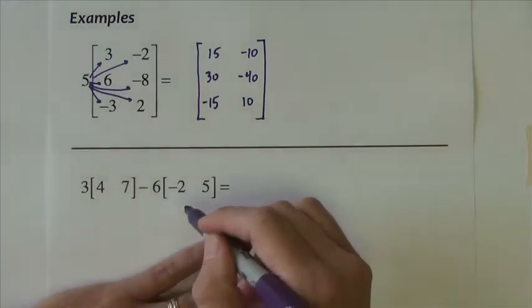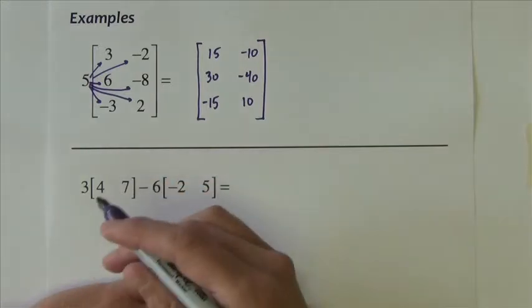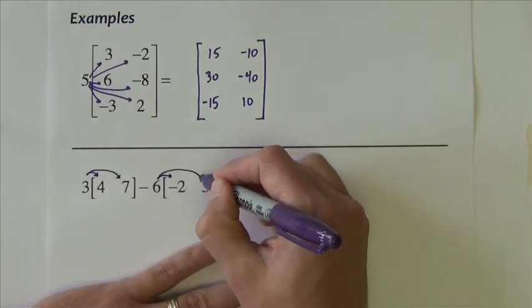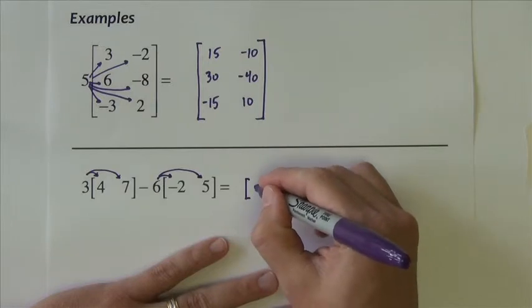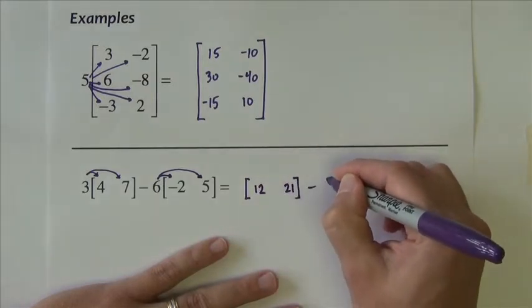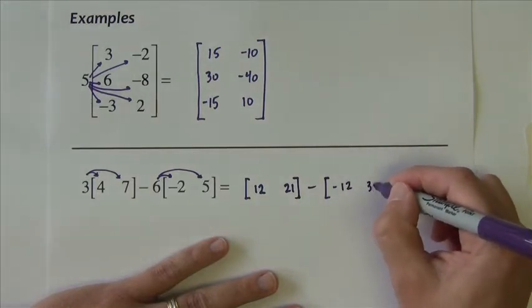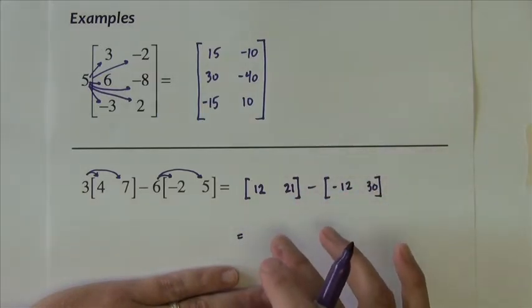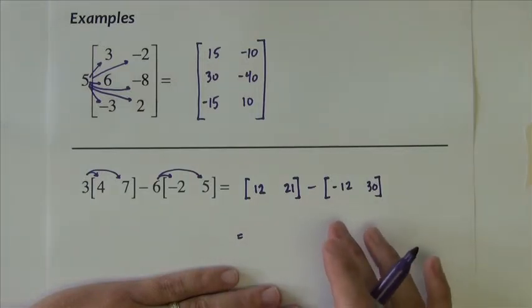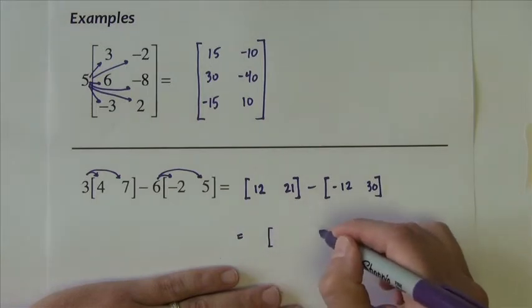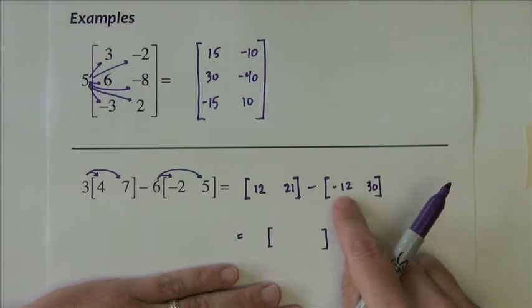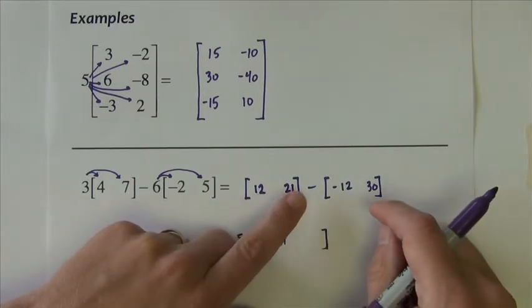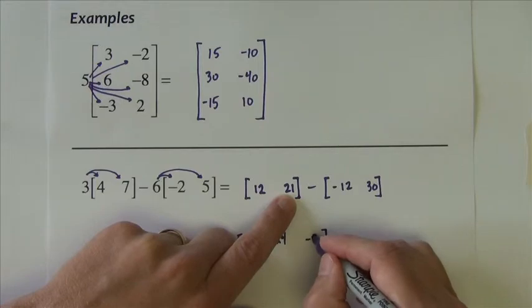The next problem has scalar products on each of two matrices combined with a subtraction. First, distribute the scalars: that gives 12, 21 for the first matrix, and negative 12, 30 for the second after multiplying by 6. Now we have a subtraction problem, so we check that both are the same size — they are, both 1 by 2. Then: 12 minus negative 12 is 24, and 21 minus 30 is negative 9.